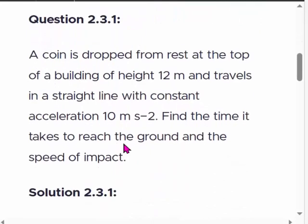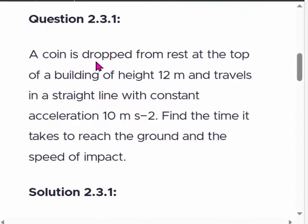Question 2.3.1: A coin is dropped from rest at the top of a building of height 12 meters. The coin travels in a straight line with constant acceleration 10 meters per second squared.